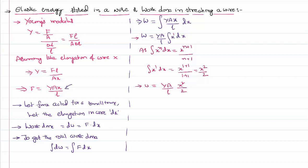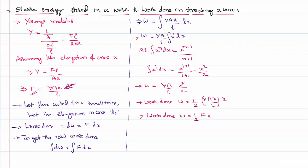I can rewrite this work done W as one-half times Y times A times x divided by L, times x. Since Y times A times x divided by L is nothing but equal to the applied force F itself, this means the work done can be expressed as one-half times the applied force times x, where x is the elongation. So work done equals half times applied force times elongation.